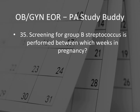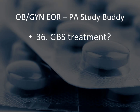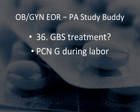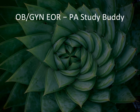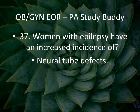Question 35: Screening for Group B Streptococcus is performed between which weeks in pregnancy? GBS screening is done between 35 and 37 weeks. They can give you different weeks — knowing 35 to 37 will always give you the right answer. Question 36: Group B Streptococcus treatment is penicillin G during labor. They'll ask when should penicillin G be administered for GBS treatment — that is penicillin G during labor.